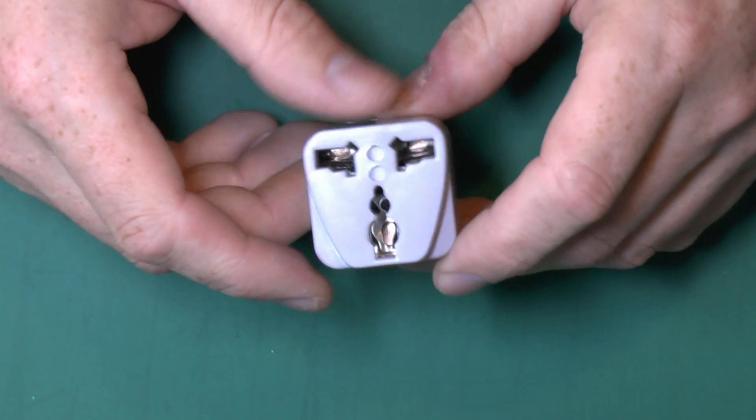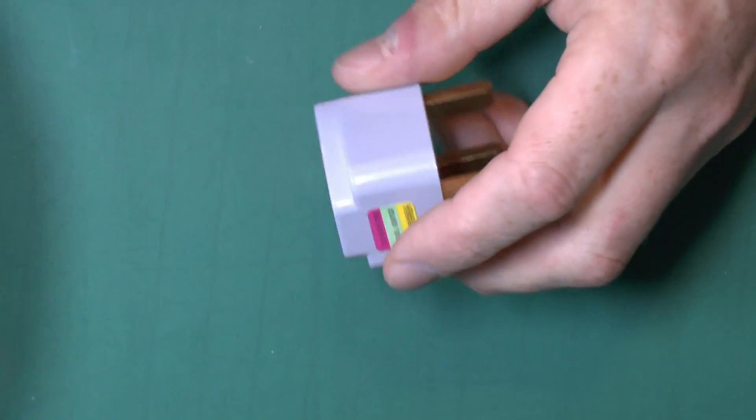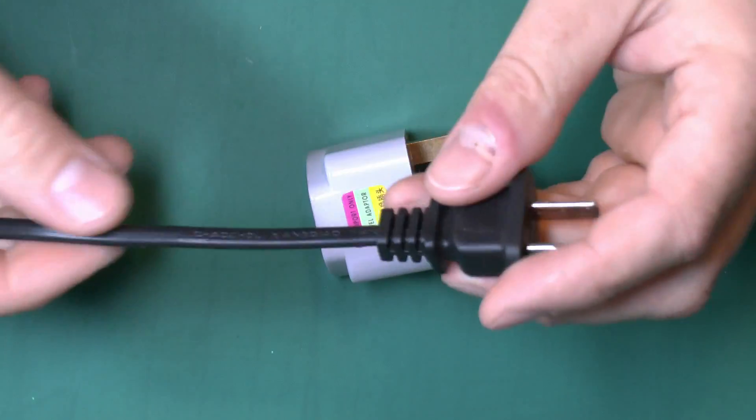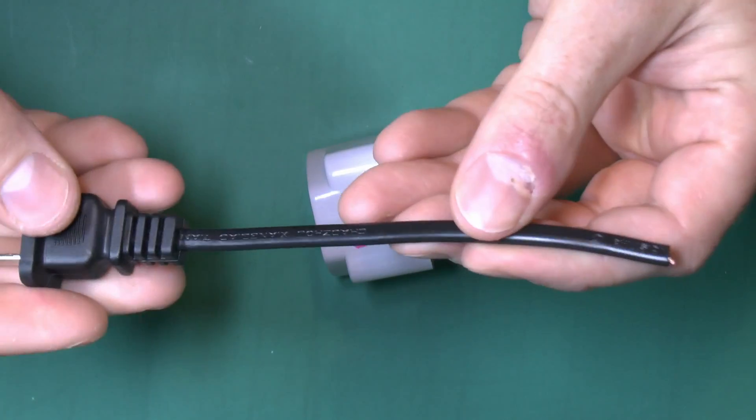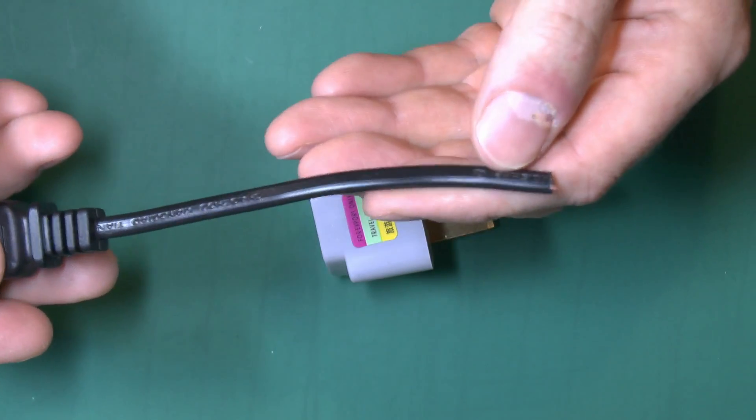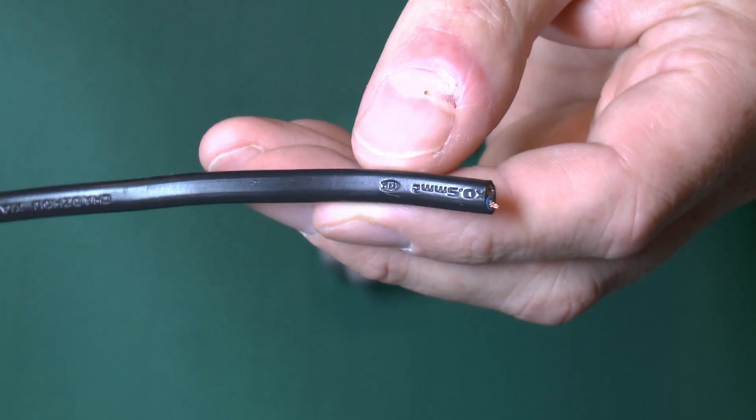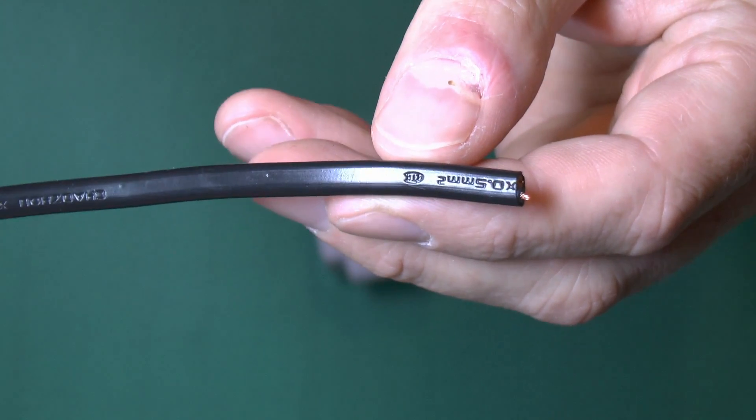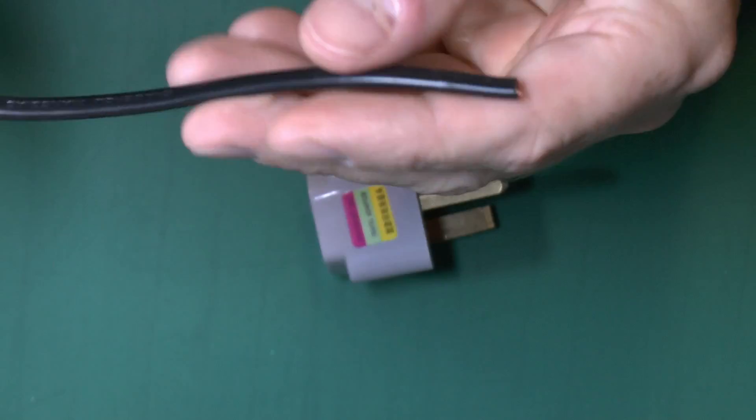The other major problem with this is there is no fuse, or at least there appears to be no fuse, so that means you've got this very thin cable which does actually have the size on it somewhere, 0.5mm² which is about the smallest you can get.